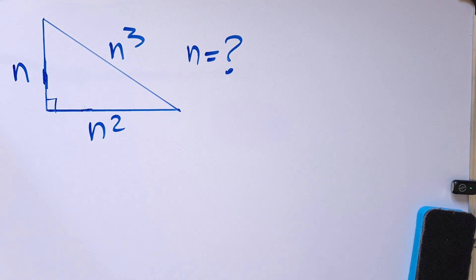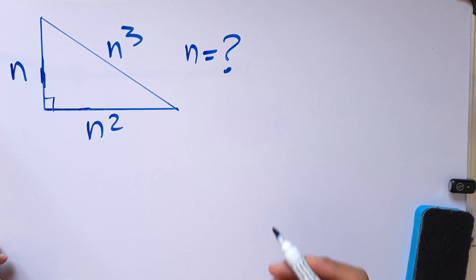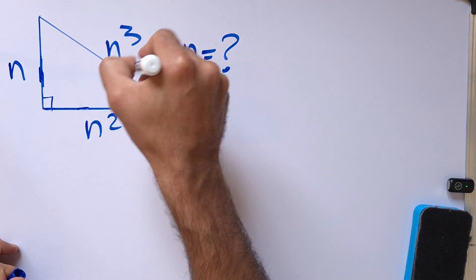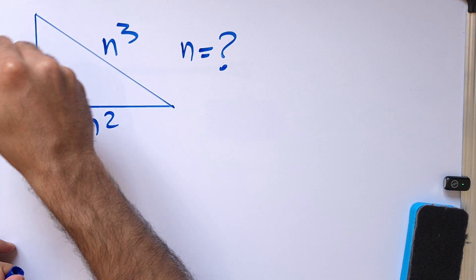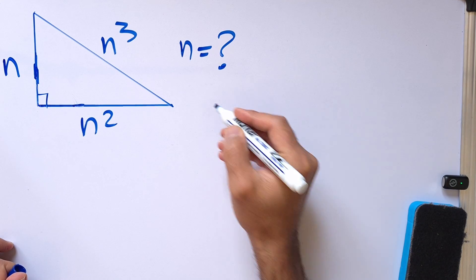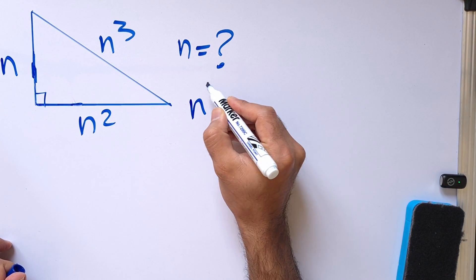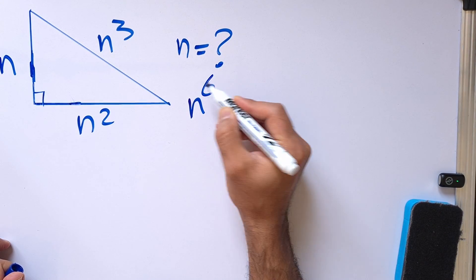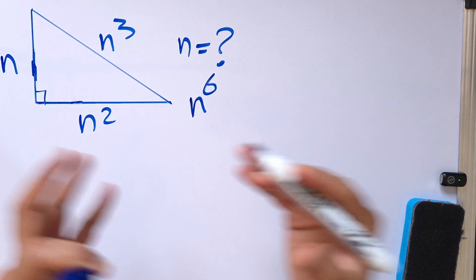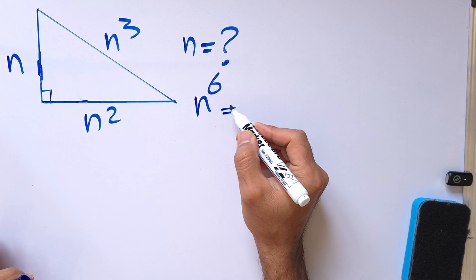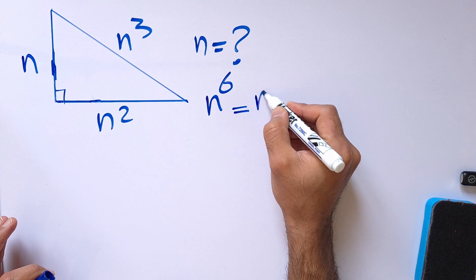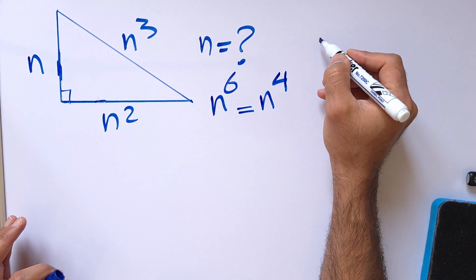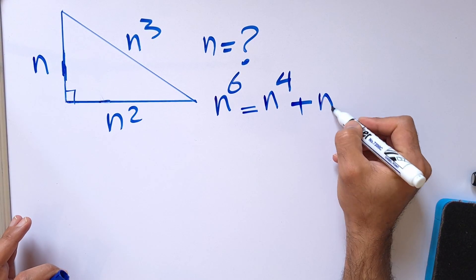The only approach with which we can solve this problem is the famous Pythagorean theorem. According to Pythagoras, the hypotenuse squared equals the sum of both sides squared. So n cubed squared equals n squared squared plus n squared, which gives us n to the 6 equals n to the 4 plus n squared.